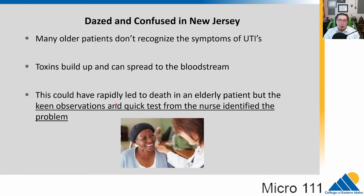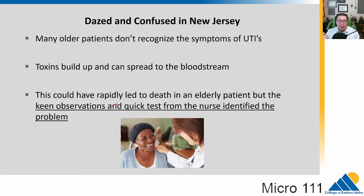A lot of older patients don't recognize the symptoms of UTIs, and because of that, the toxins bacteria produce can build up and spread into the bloodstream. This case could have quickly led to death, but the keen observation of this nurse identified the problem. Understanding not just what to do, but what to look for and what might be causing it is key — not just for people working with patients, but in everyday life. Urinary tract infections can become quite severe if left untreated.